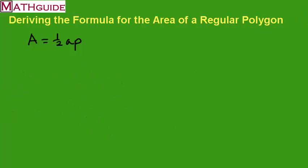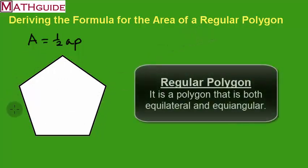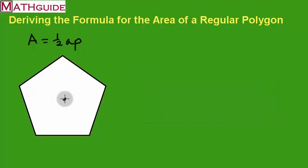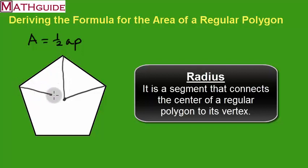Let's put a regular polygon for us to discuss. For the purposes of discussion, I drew a pentagon — a regular pentagon — so all the sides are congruent and all the internal angles are congruent to each other. What you do when you work these problems is you always start with the center of the polygon and draw the radii, which are segments that connect the center to a vertex.